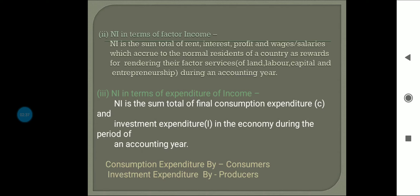Third, national income in terms of expenditure of income. National income is the sum total of final consumption expenditure and investment expenditure in the economy during an accounting year. So consumption expenditure by consumers and investment expenditure by producers, when summed together, give us the national income in terms of expenditure.